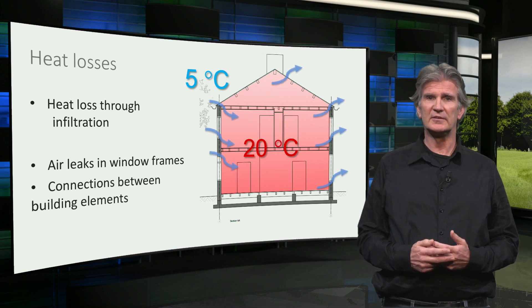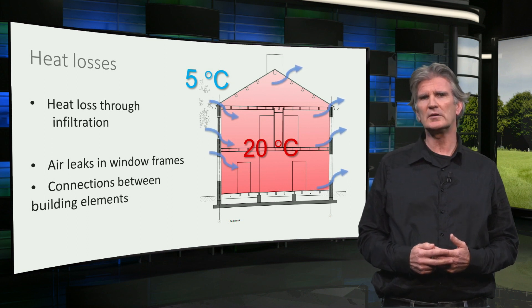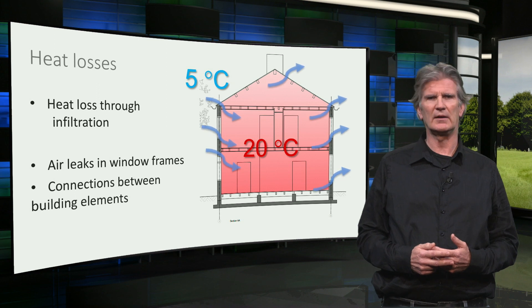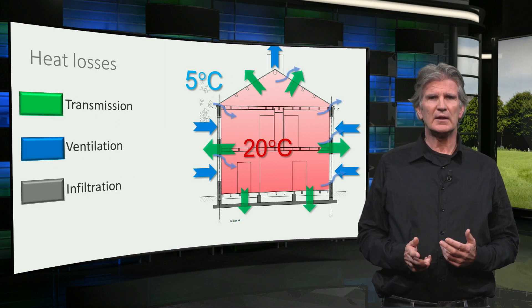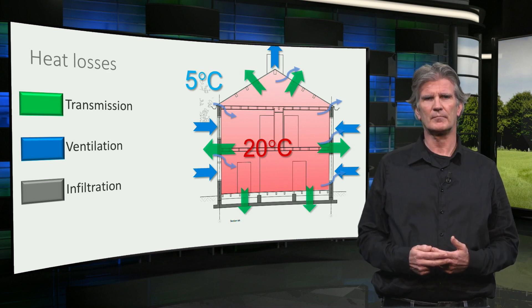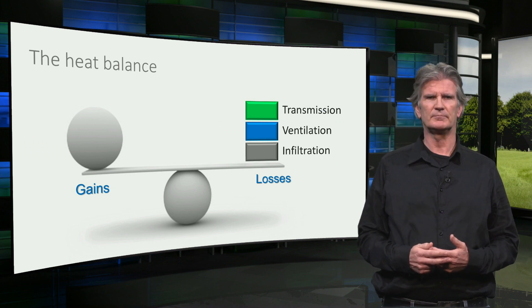Besides the necessary ventilation, there is also infiltration — that is the unwanted leakage of air through cracks and openings in the building envelope. So the heat losses consist of transmission, ventilation, and infiltration. Now let's have a look at the other side of the heat balance: the heat gains.